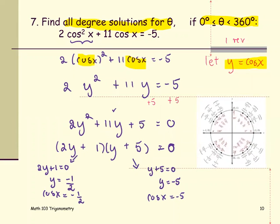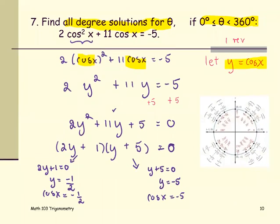Use the unit circle to help us determine the angle x. The cosine x is negative 1 half which is negative. That means x will be in the second quadrant and the third quadrant. The cosine x is the first coordinate. The first coordinate is negative 1 half and angle in degrees will be 120 degrees.